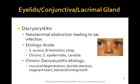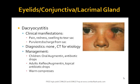Dacryocystitis is a nasolacrimal obstruction leading to a sac infection. Acutely it can be caused by Staph aureus and group B hemolytic Strep; chronically by Staph epidermidis. The chronic etiology results in mucosal degradation, ductal stenosis, stagnant tears, and bacterial overgrowth. Patients present with pain, redness, swelling, and discharge.